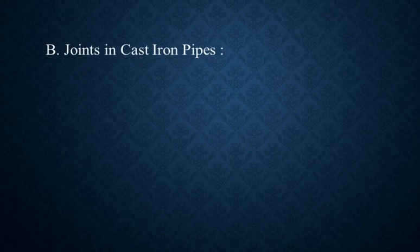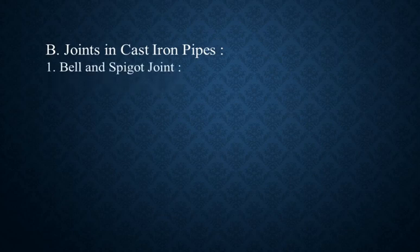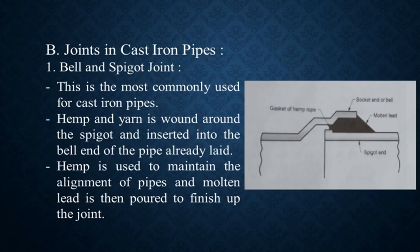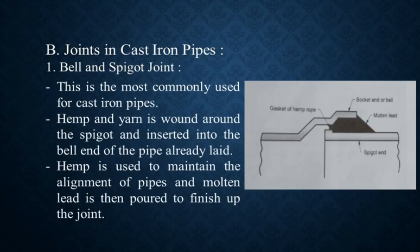B — joints in cast iron pipes. First is the bell and spigot joint. We saw concrete pipes connected by cement collar joint and spigot joint. This bell and spigot joint is also used for both concrete pipes and cast iron pipes, and it is the most commonly used joint for cast iron pipes.